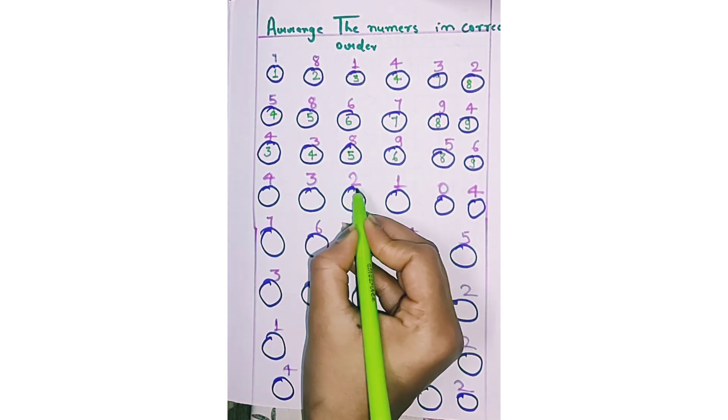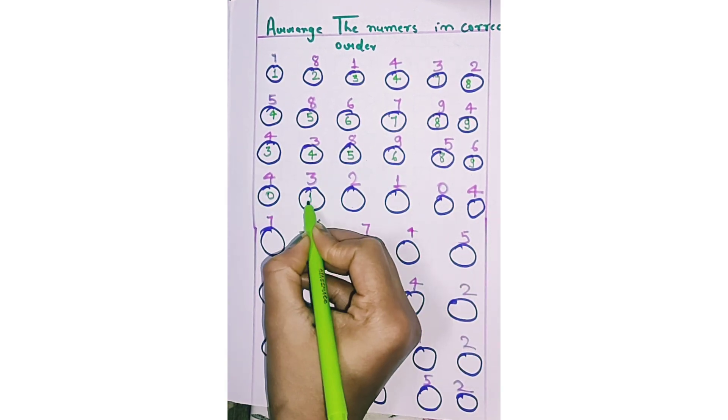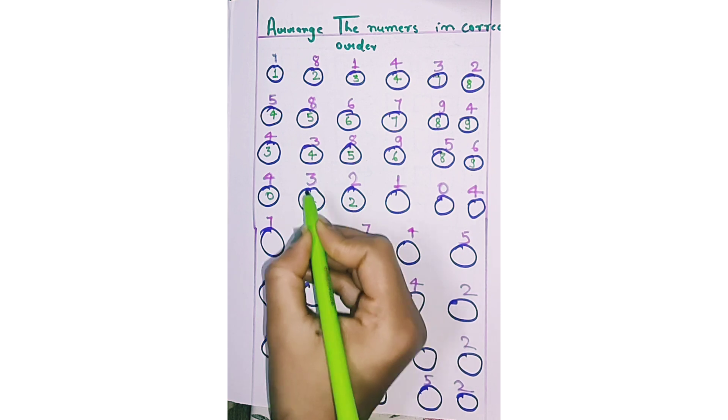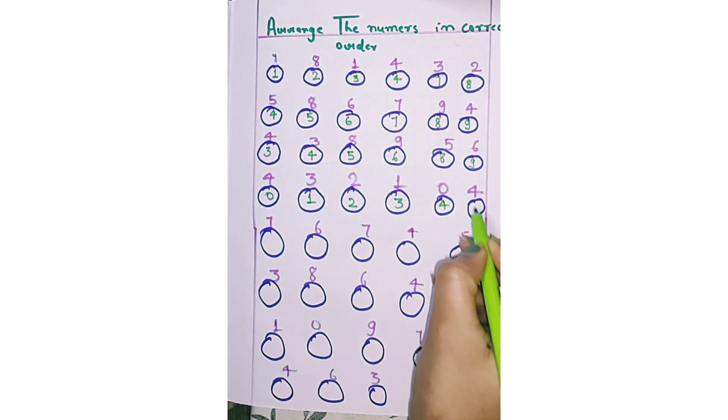Again 4, 3, 2, 1, 0, and 4. First 0, 1, 2, 3, 4, and 4.